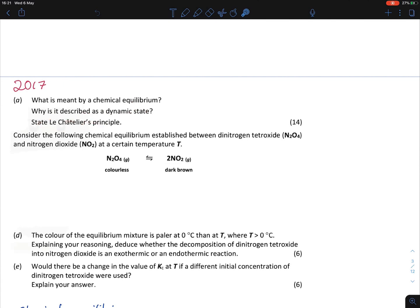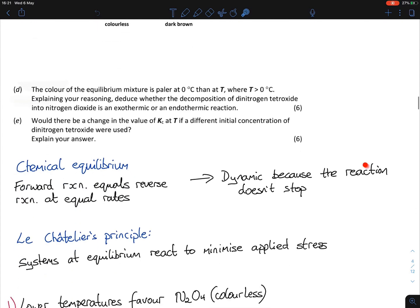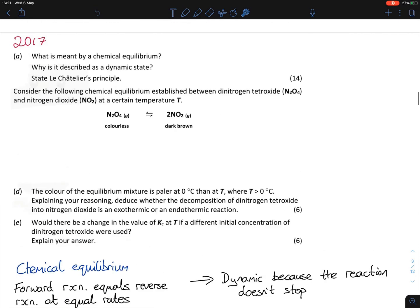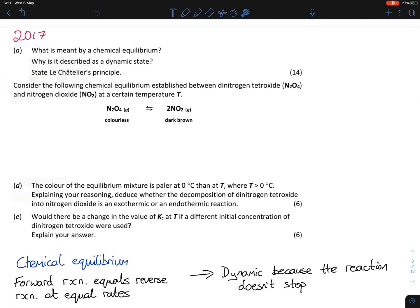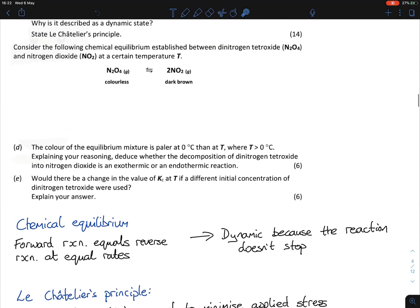2017 part A: Three definitions - what is meant by chemical equilibrium, what is described as the dynamic state, and state Le Chatelier's principle. Chemical equilibrium: the forward reaction equals the reverse reaction at equal rates. You must have the word 'rates' in there. Why is it dynamic? Because the reaction doesn't stop. You form the products and then reform the reactants - it keeps going back and forth like a tennis match. Le Chatelier's principle: systems at equilibrium react to minimize applied stress.